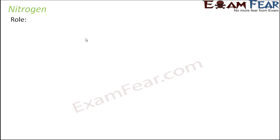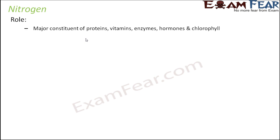Nitrogen is a major constituent of proteins, vitamins, enzymes, hormones, and chlorophyll. Proteins are made up of amino acids, and amino acids are those with an amine group — that is, an NH2 group — so nitrogen is present there. Proteins are present everywhere inside a plant body. Vitamins, enzymes, hormones, and chlorophyll are all present throughout a plant's body, and everywhere their composition has nitrogen in it.